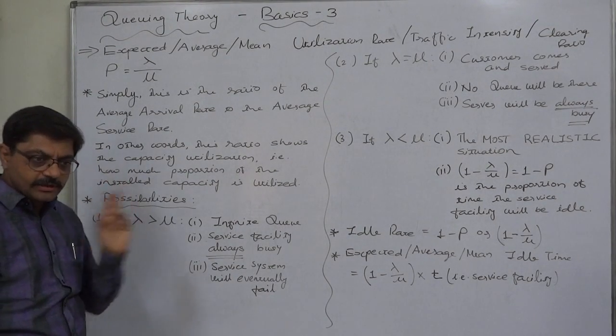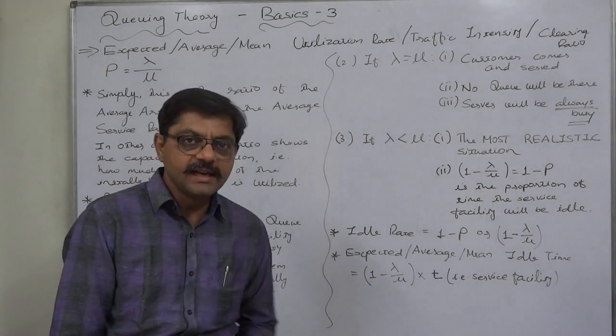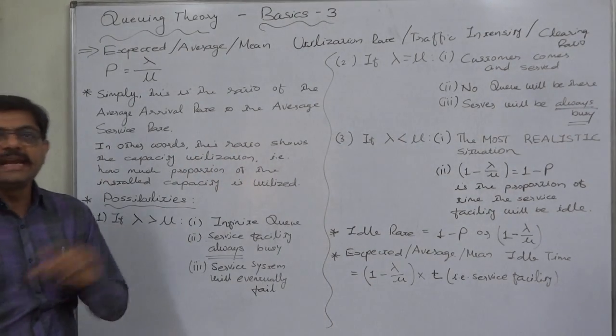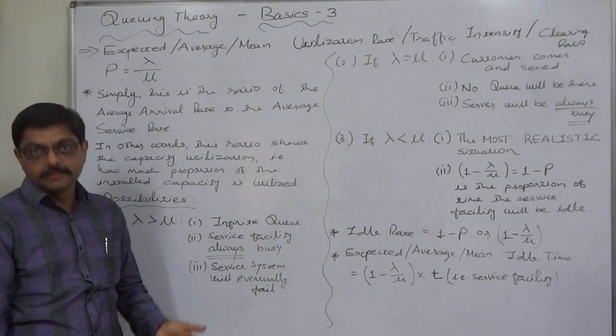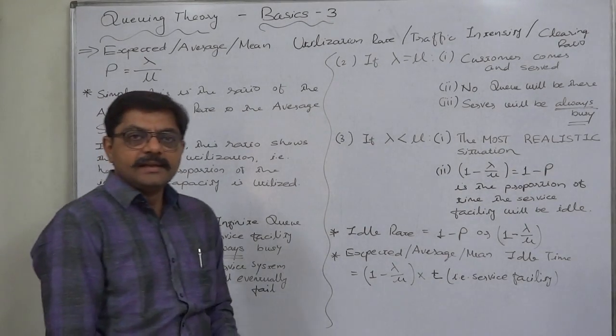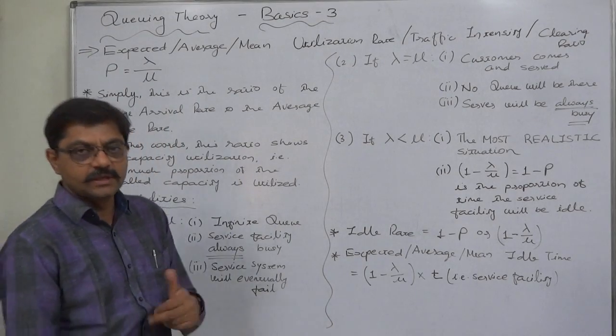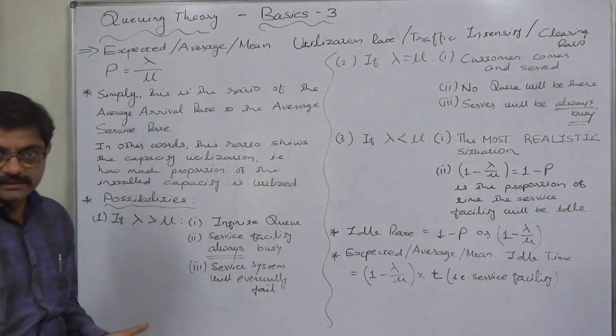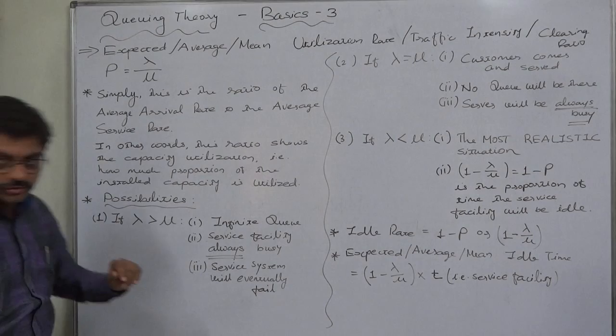That means we can say that in our previous two examples the utilization rate comes to 0.8 or 80 percent. That means 80 percent of the installed capacity of the server is actually utilized. This is the interpretation of this ratio.